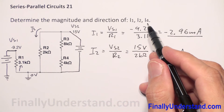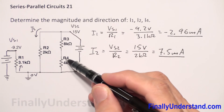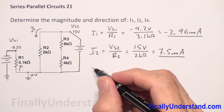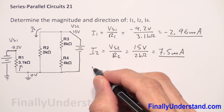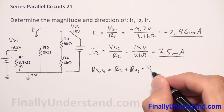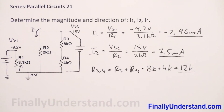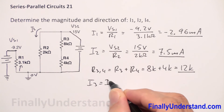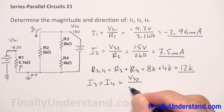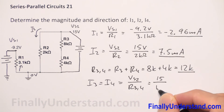Next, I'm supposed to find the current through resistor R4. Because R3 and R4 are in series, the same current flows through both. To simplify the problem, I'll find the equivalent resistance: R3,4 equals R3 plus R4, which is 8k plus 4k, equal to 12 kilo ohms. So I3 equals I4, and this equals voltage source 2 divided by R3,4 — that's 15 volts over 12k.